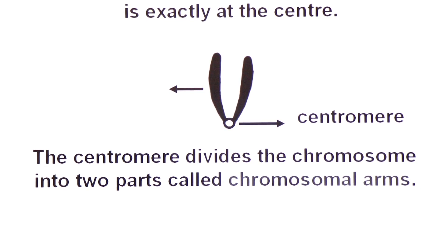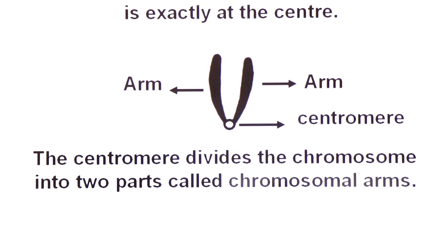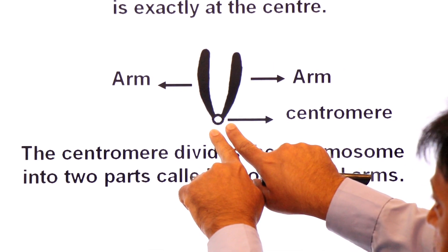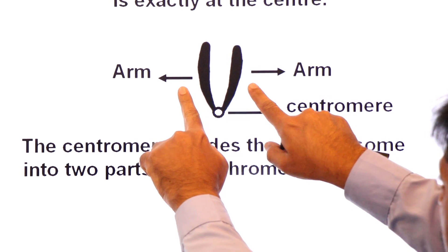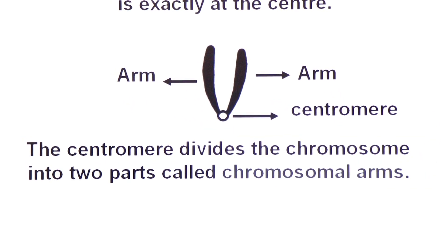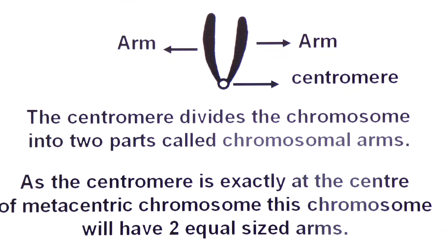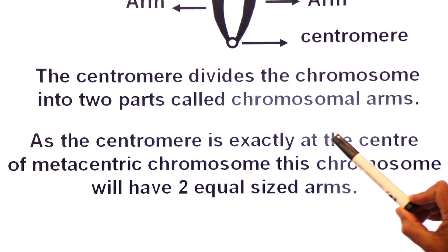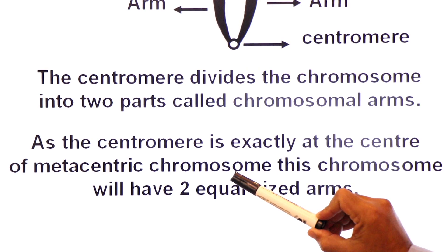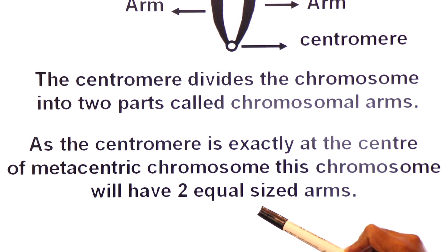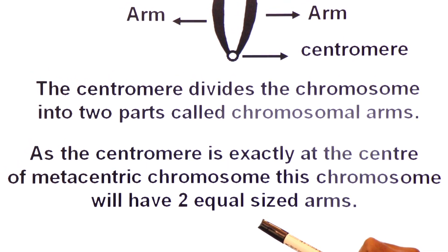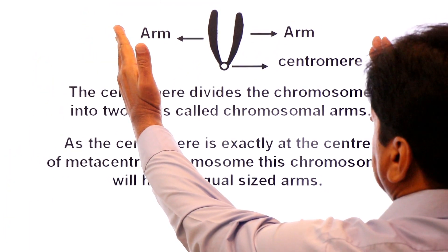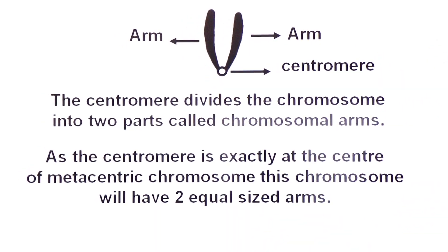In a metacentric chromosome, the centromere is exactly at the center, so this chromosome will have two equal-sized arms — the arms are completely equal in size.